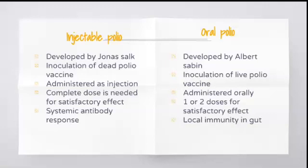Oral polio is a live vaccine and injectable polio is a killed vaccine. Injectable polio is administered as injection whereas oral polio is administered orally. Complete doses are needed for satisfactory effect in injectable polio whereas oral polio requires only 1-2 doses for satisfactory effect. Injectable polio stimulates systemic antibody response whereas oral polio vaccine stimulates local immunity in the gut.